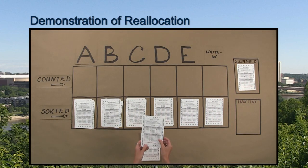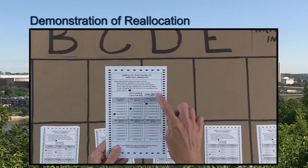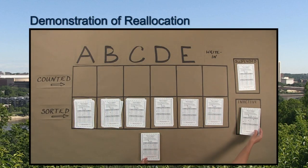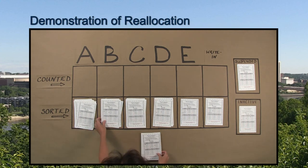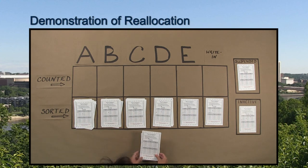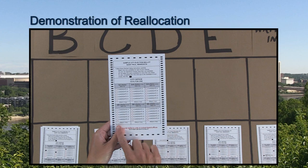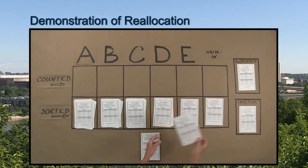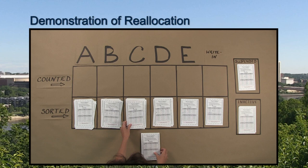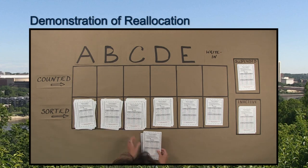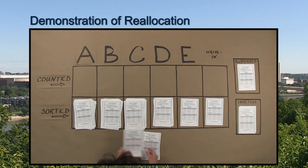This ballot contains an identifying mark and by law cannot be counted. It is placed in the inactive pile for the duration of the reallocation. This ballot does not have any choices indicated and is placed in the inactive pile for the duration of the reallocation. Inactive and suspended ballots are not part of the first choice votes and do not impact the threshold to win the election.